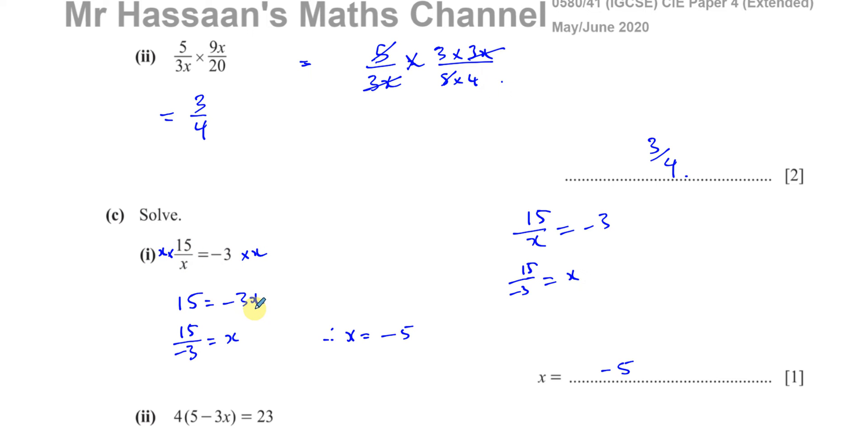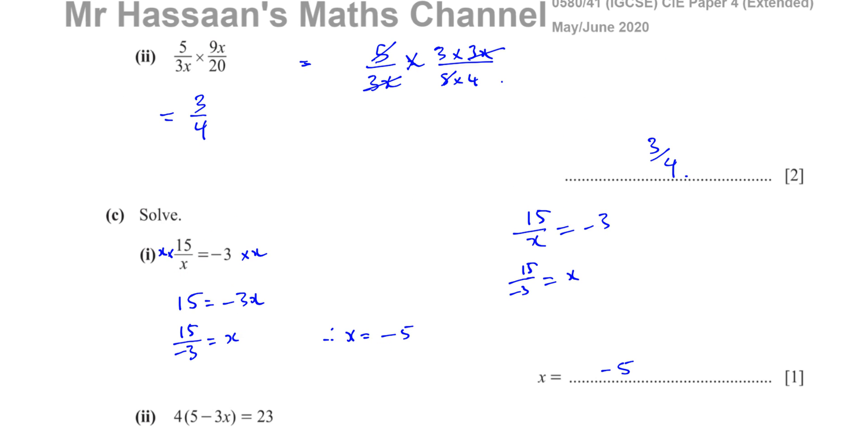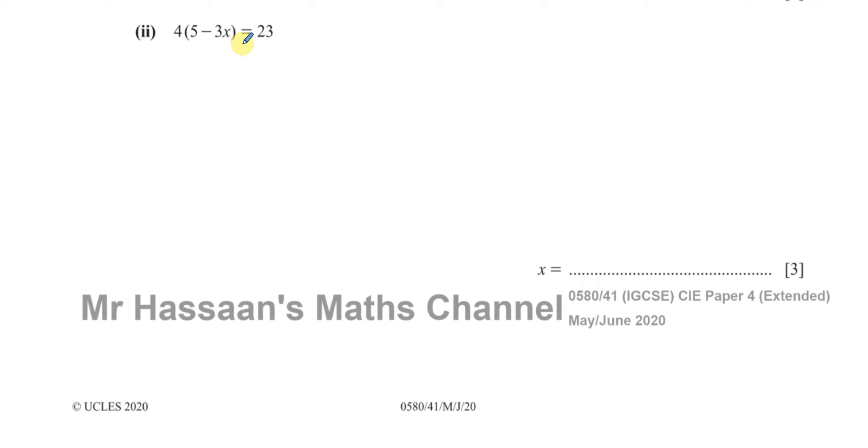So we're getting rid of the fraction by multiplying by X first and then dividing by negative 3. If you understand that, then it's fine if you just write from this step to that step, as long as you understand what's going on mathematically. Then part 2, C part 2, here we have this equation to solve 4(5-3x) = 23. Now we can solve this in a couple of ways. If 23 was divisible by 4, then dividing by 4 would be easy. But as 23 is not divisible by 4, I don't want to be left with fractions in the beginning. So I'm going to expand the brackets first.